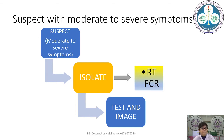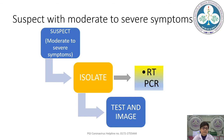If a suspect has moderate to severe symptoms, we isolate, test, and image. The best scenario is to wait for the test result before imaging if the patient is stable and not requiring hemodynamic support or immediate intervention. This is because of the problem of not being able to isolate a machine dedicated for suspect patients in most scenarios. If you have dedicated portable X-ray machines for suspect patients, you can image immediately to help in triaging.